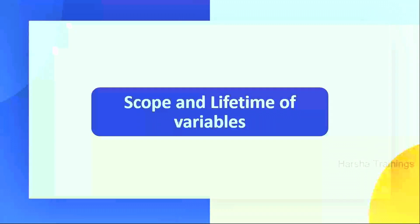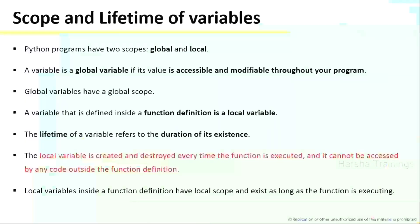Today we will discuss what is the scope and lifetime of variables. Python variables have two different scopes: the first one is a global scope and the second one is a local scope.